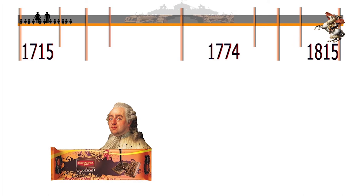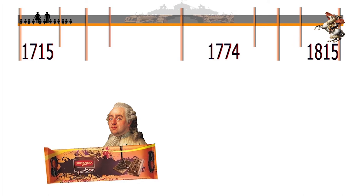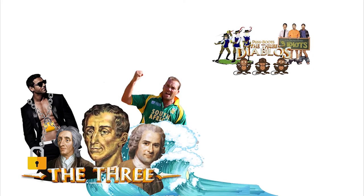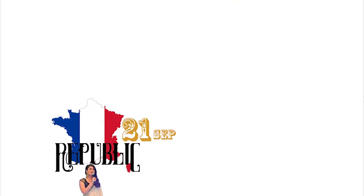Use bourbon biscuits to remember King Louis XVI. He belonged to the Bourbon family of kings. Or a dog in the sea howling. France becomes a republic.